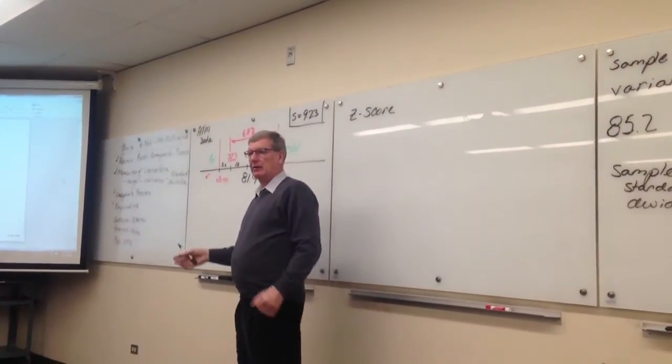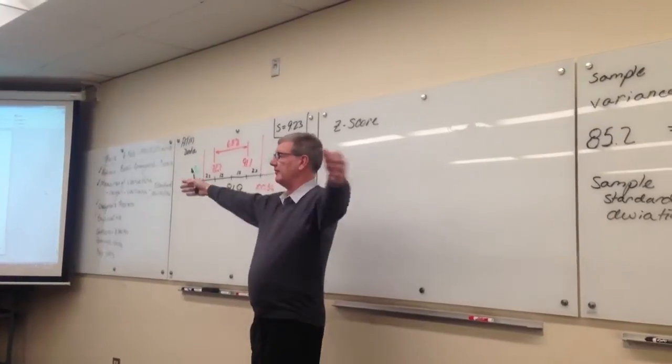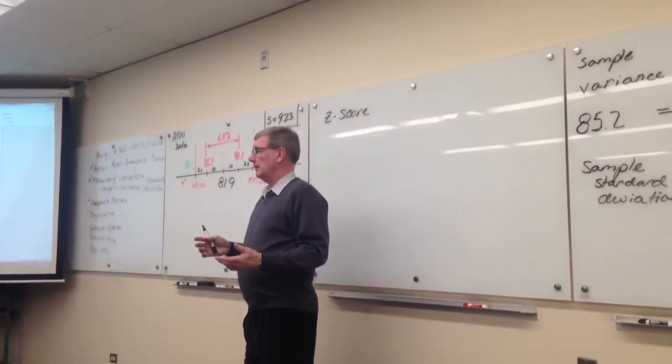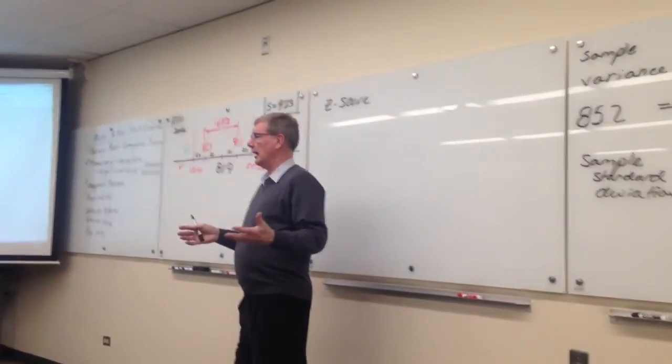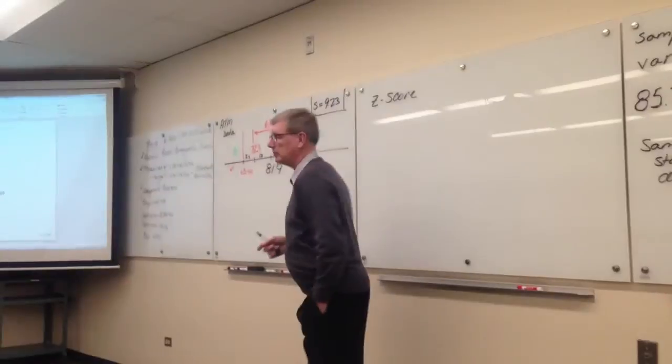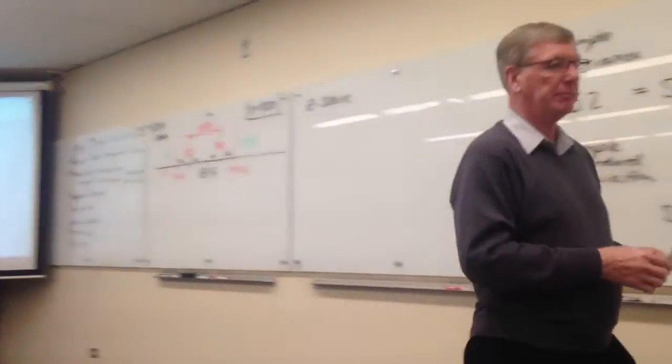And so an outlier is a piece of data that's very far from the middle. Well, how far to be qualified an outlier? Well, let's go back to the slide on the empirical rule.